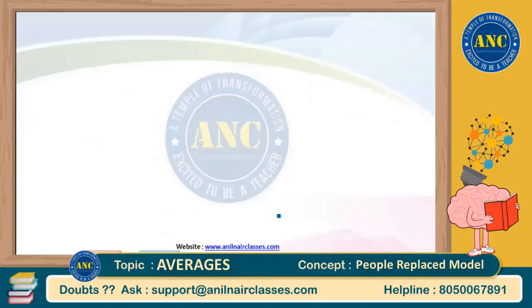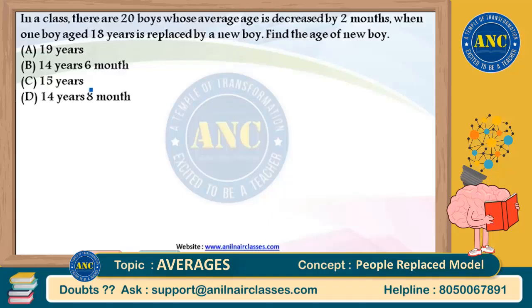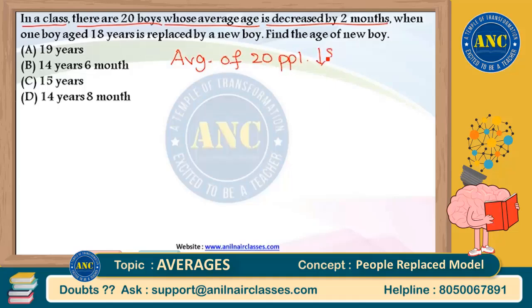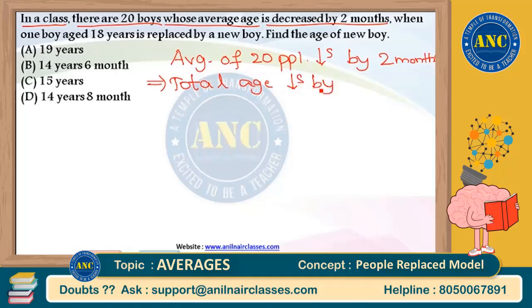Please see the next question — again a similar, beautiful variety. In the previous question, the average age increased by some years. Now see this question: in a class, there are 20 boys whose average age is decreased by two months. Average of 20 boys decreases by two months means total age will decrease by 2 into 20, which is 40 months. That means total age will decrease by 40 months, which is 3 years and 4 months.